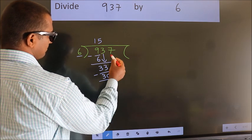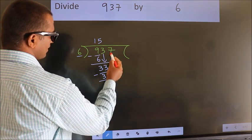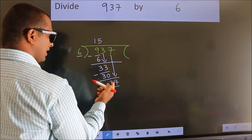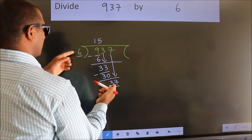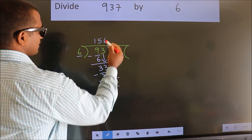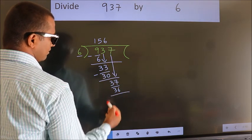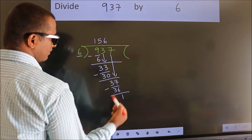After this, bring down the beside number. So, 7 down. So, 37. A number close to 37 in 6 table is 6 times 6 is 36. Now we subtract. We get 1.